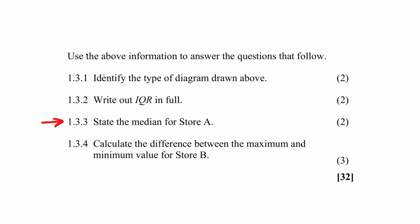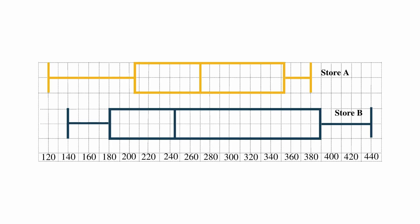In question 1.3.3, you have to write down the median for store A. The median is represented by this line in the box and whisker plot. The median for store A is read off as 270.